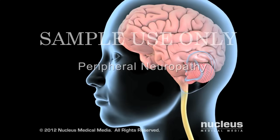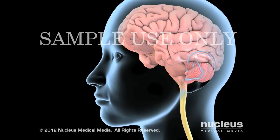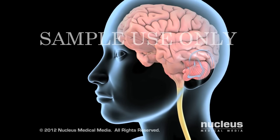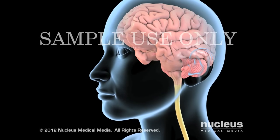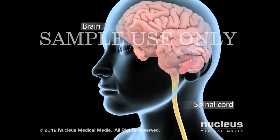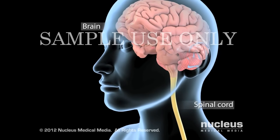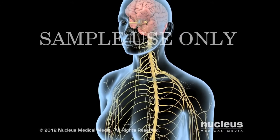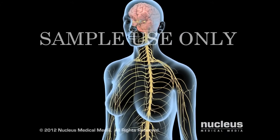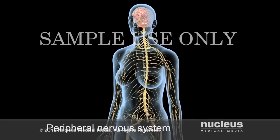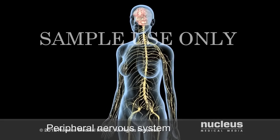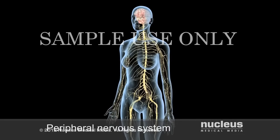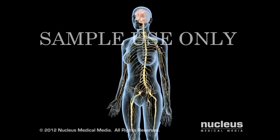Peripheral neuropathy is a common condition occurring when injury or disease damages your peripheral nervous system. Originating from your brain and spinal cord, peripheral nerves extend to your skin, muscle, and tissues. Your peripheral nervous system relays vital information between your body and the brain in the form of electrical impulses.